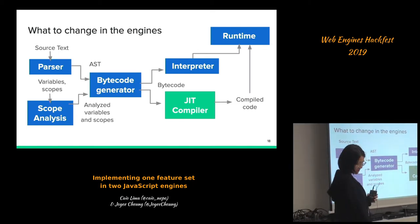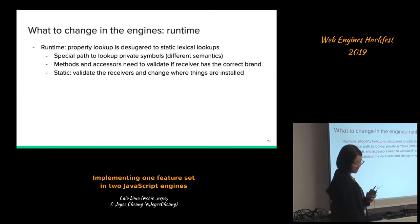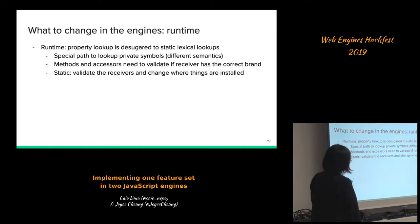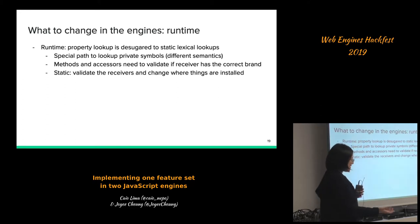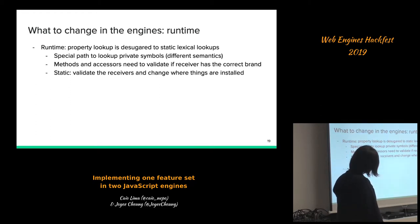We also need to modify the runtime to implement extra semantics. In V8 we need to add special paths to look up private symbols, with the different semantics Kyle talked about earlier. We also need to validate the receiver for access to private methods and accessors, and the same for static features — in the case of static, the only valid receiver is the class itself. We also need to change where things are installed: for static features we install them on the class itself instead of on instances.